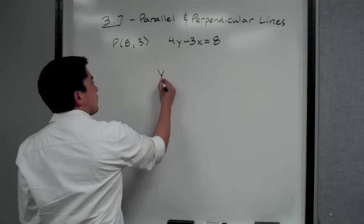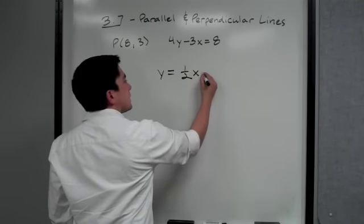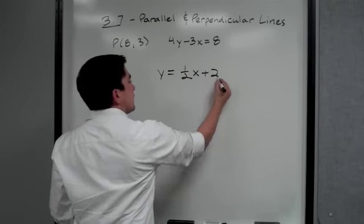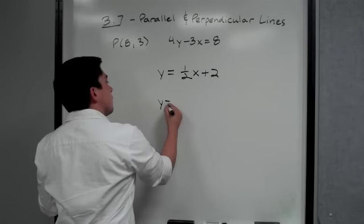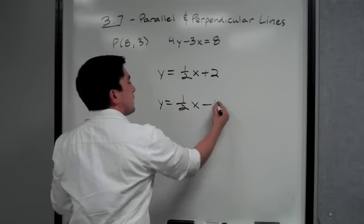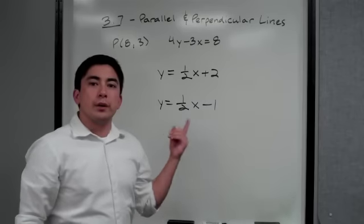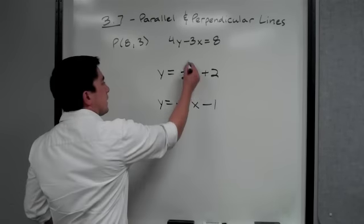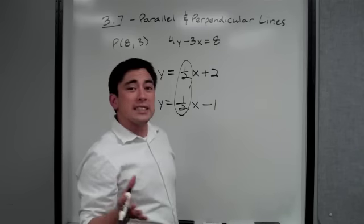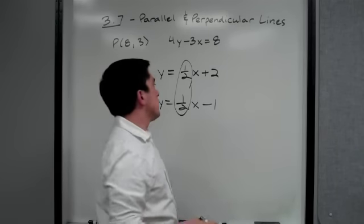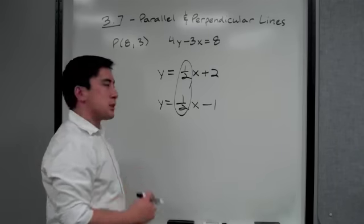For example, y equals one-half x plus two and y equals one-half x minus one — we know these two lines are parallel because they have the exact same slope. That is how we know two lines are parallel: same slope.